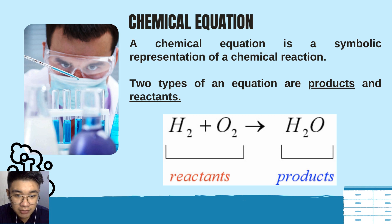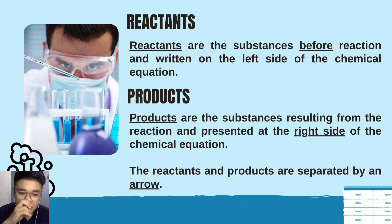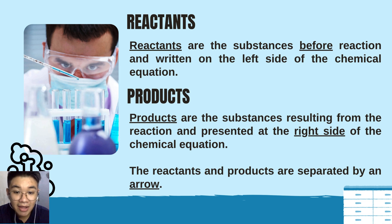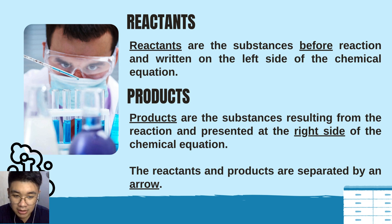Reactants are the substances before the reaction, written on the left side of the chemical equation. Products are the substances resulting from the reaction, written on the right side. Reactants and products are separated by an arrow in the center.